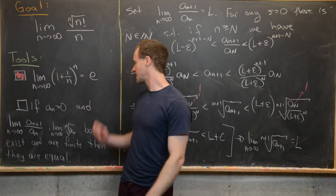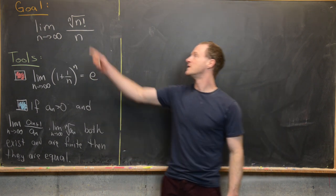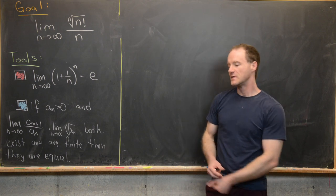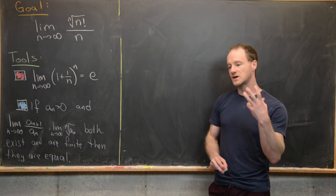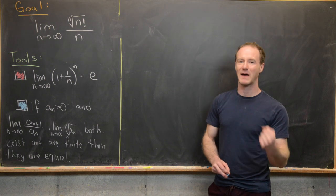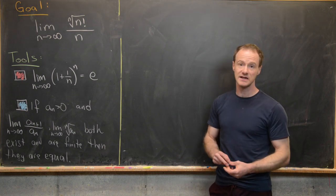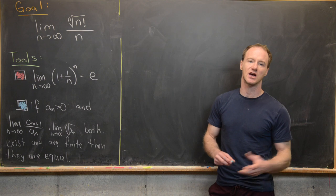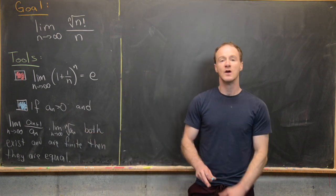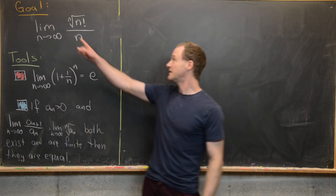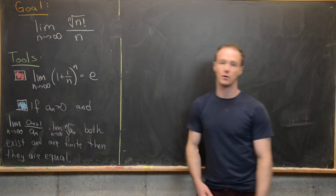Now we've got the second tool and we're ready for our final goal: the limit as n goes to infinity of the nth root of n factorial over n. To be careful, we should confirm this limit exists — all terms are positive so it's bounded below by zero, and one can show it's decreasing by induction, so by the monotone sequence theorem it converges. Since it converges and we can write it as a root, we can apply the result we just proved.